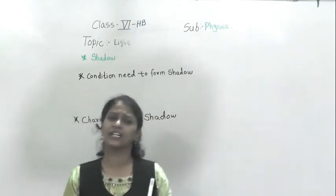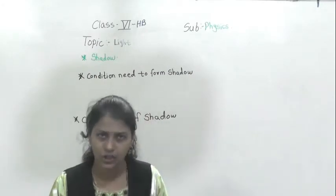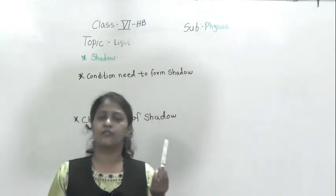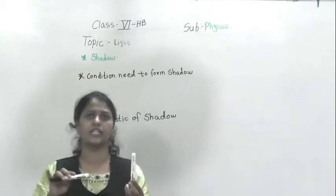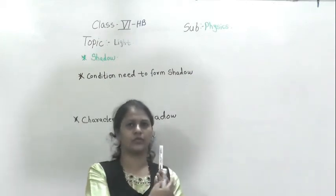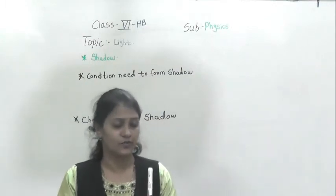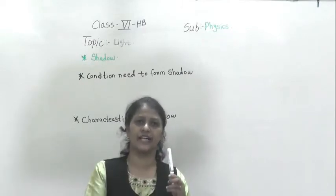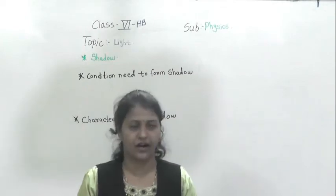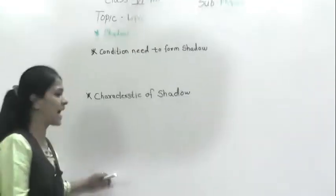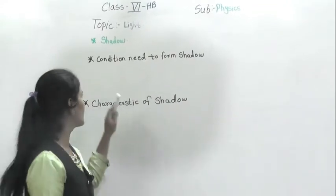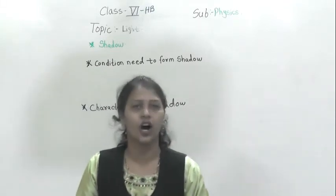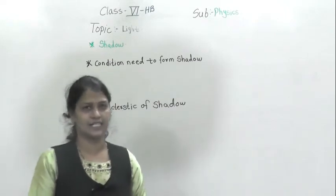For example, you can do this activity at home. If you have a torch, you can switch it on and keep any opaque object — for example, a pen — in front of it, and observe the shadow behind that object. The dark part that you observe is called the shadow.